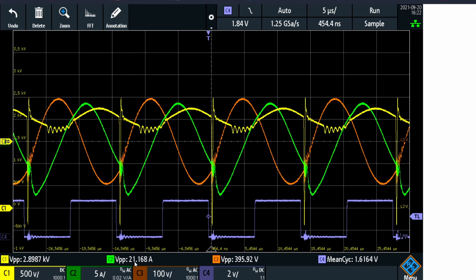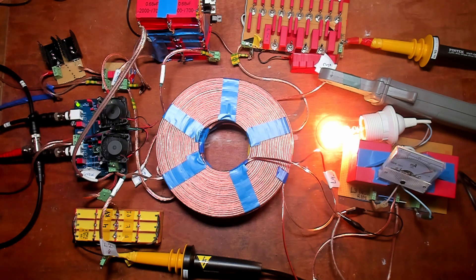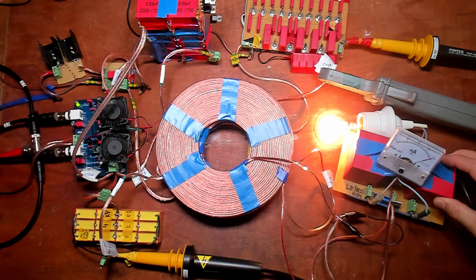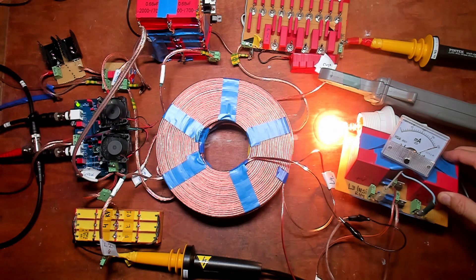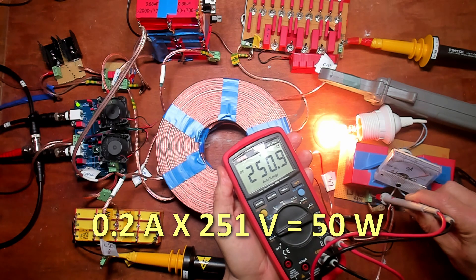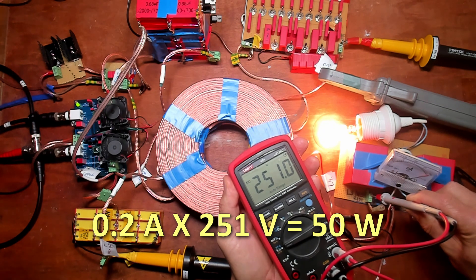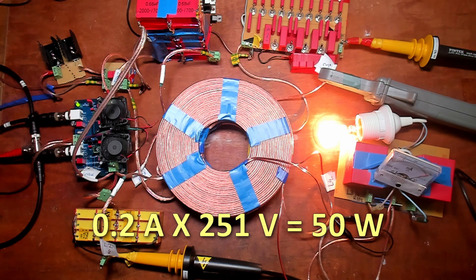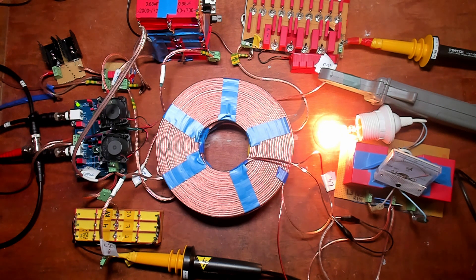If you now take a look at the current of L3, that is now 21 amps peak to peak and it is still amplified. Let's take a look at the lamp. The lamp is brighter right now. If you take a look at the milliamps, it is now maxing out at 200 milliamps and the voltage, we measure that, 251 volts output at 200 milliamps. That tells me it's a 50 watt output.